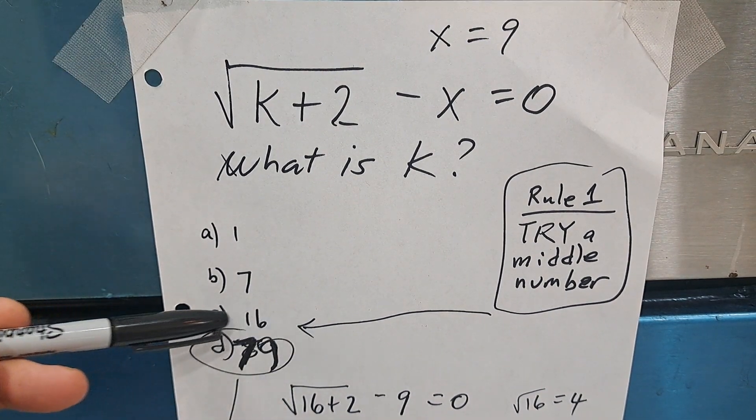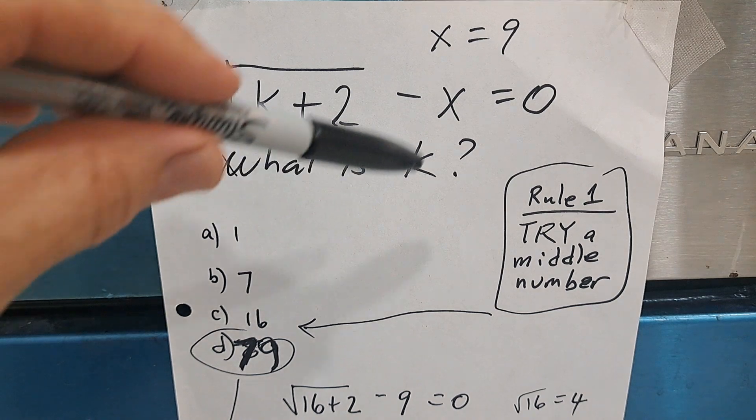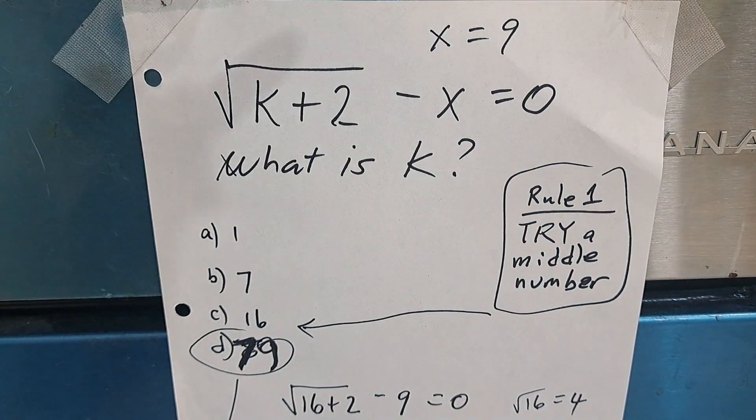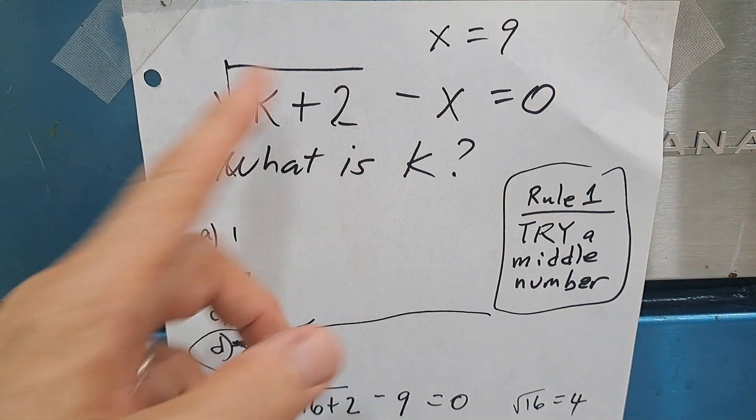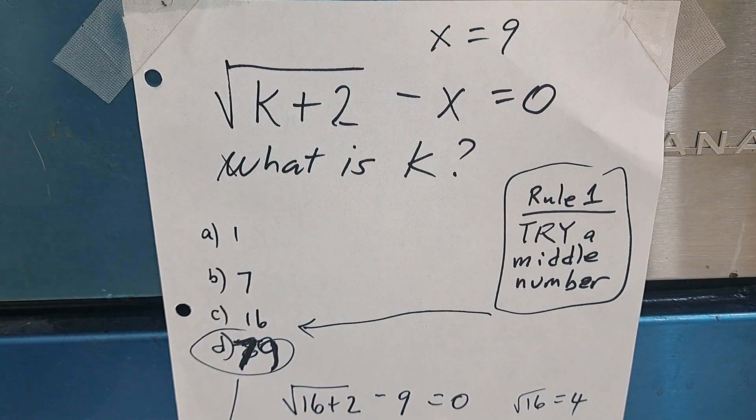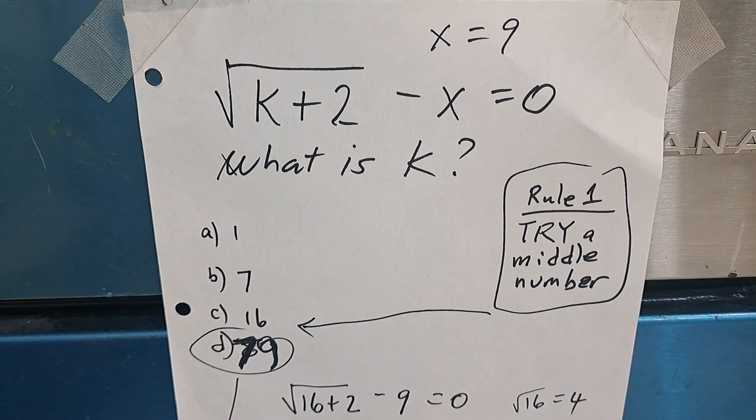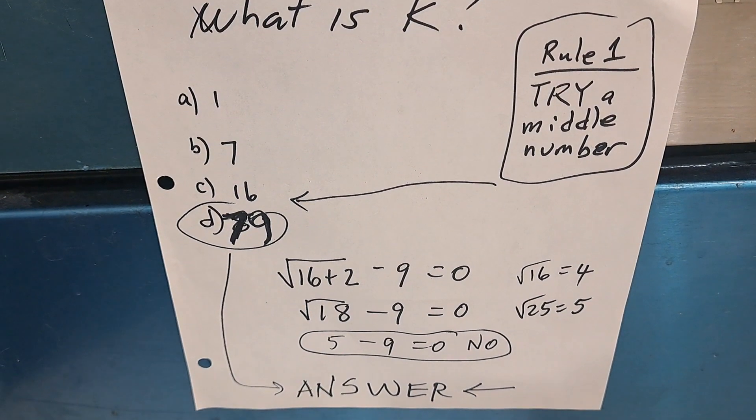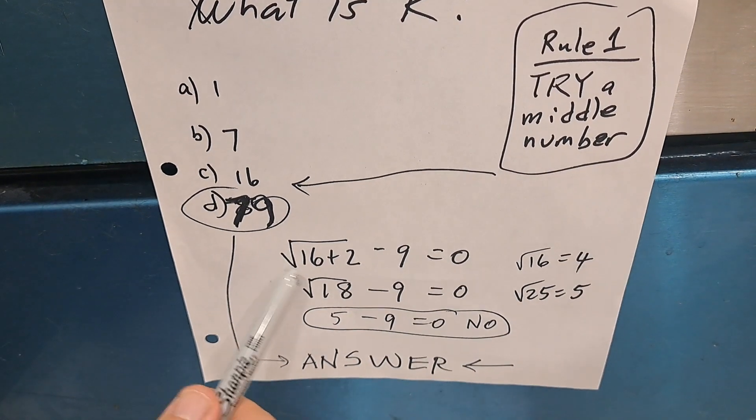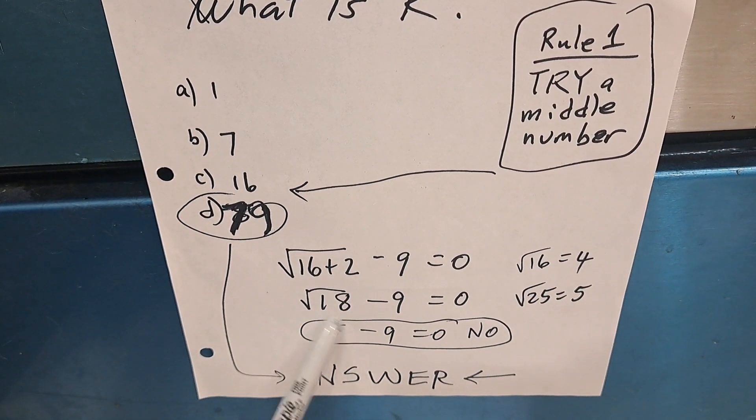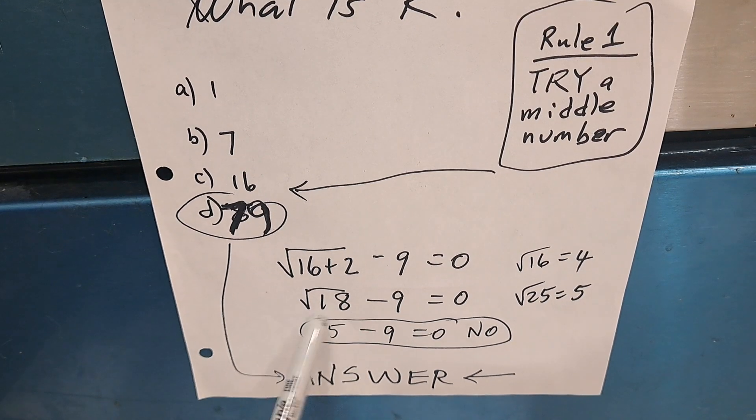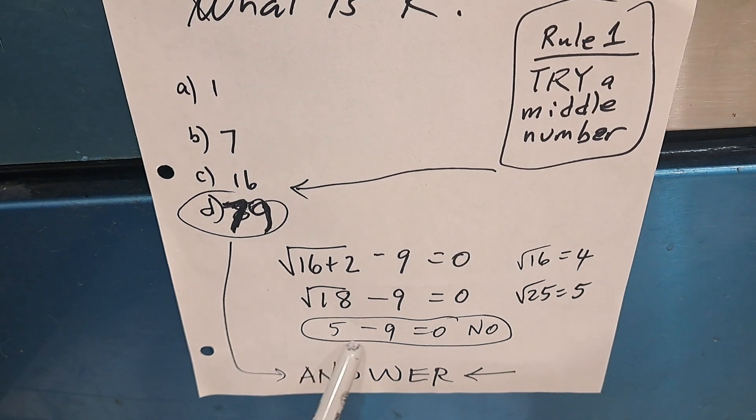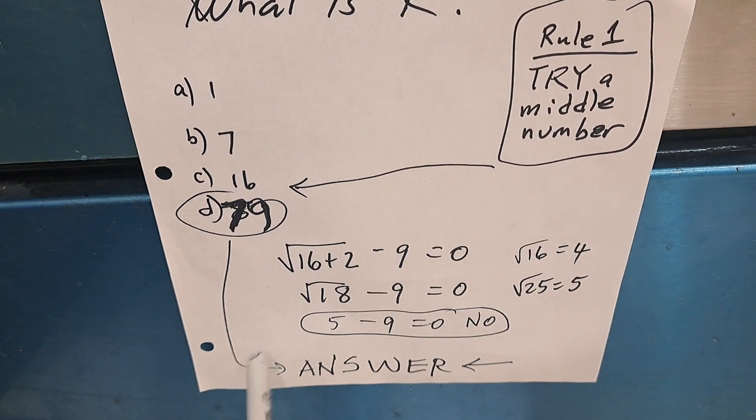So I like choosing the third one because partly I understand that this has to be big enough to be more than 9 or equal to 9, right? So when we drop in, we see 16 plus 2 is 18. But the square root of 18 is somewhere between 4 and 5, and 5 minus 9 does not make sense.